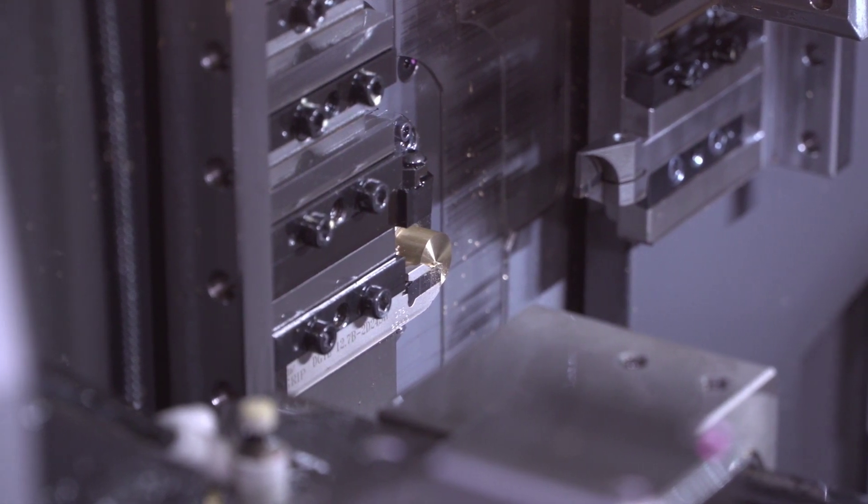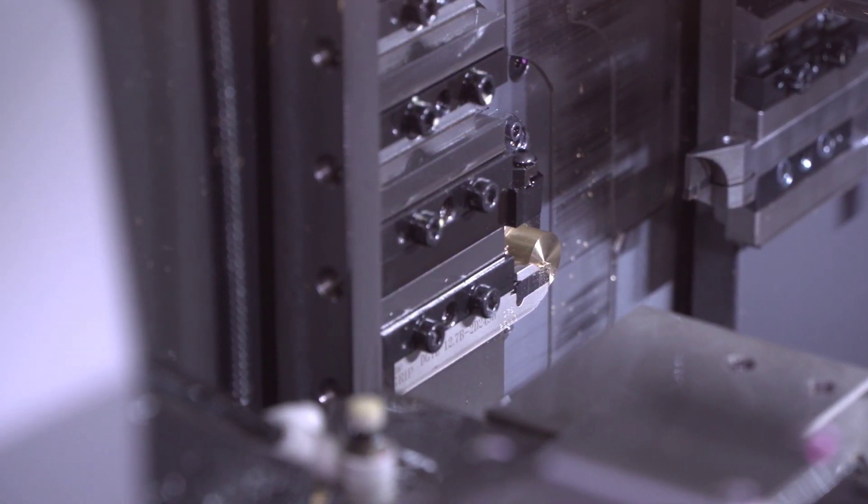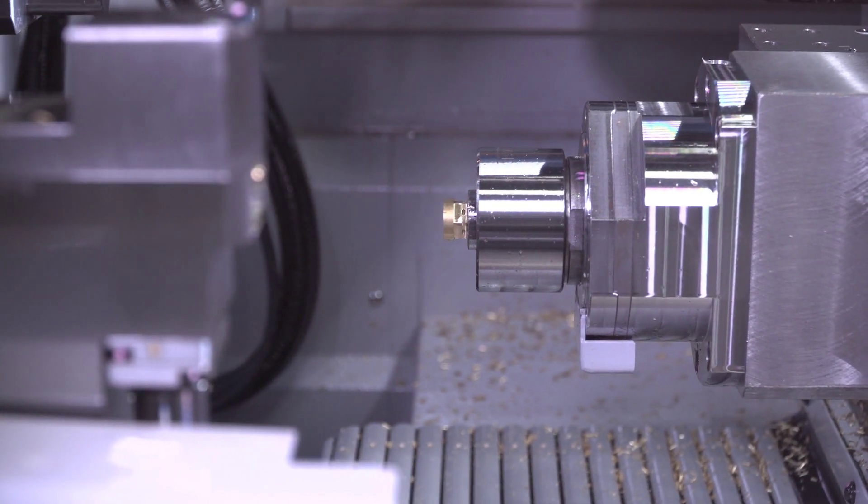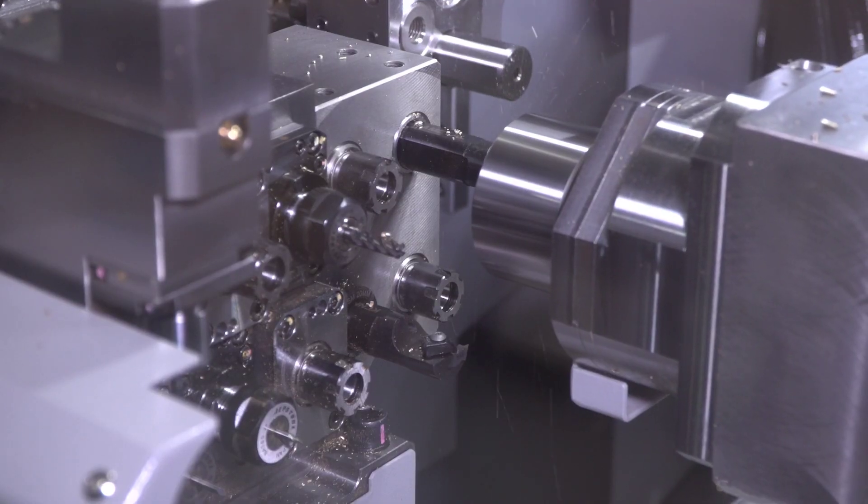This main spindle is 10,000 rpm. It's a 5 horsepower main spindle. It can be run as Swiss or chukar, meaning guide bushing or no guide bushing.